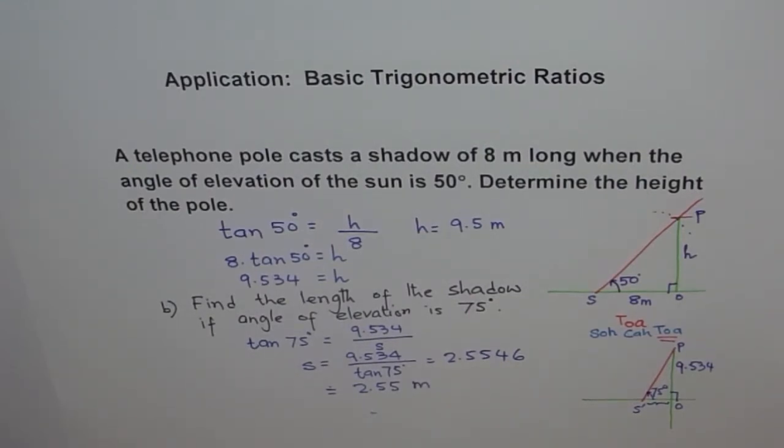So we can find the length of the shadow for different angles of elevation. I hope you understand how we apply the trigonometric function tangent to find first the height of the pole, and second, the length of the shadow for a different angle of elevation.